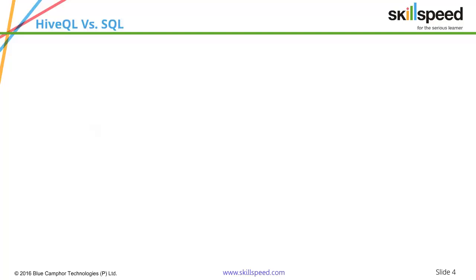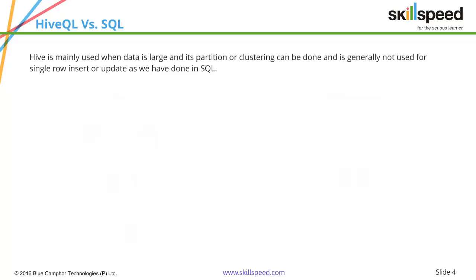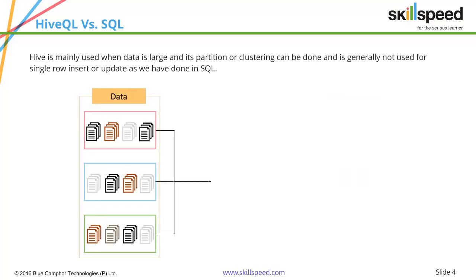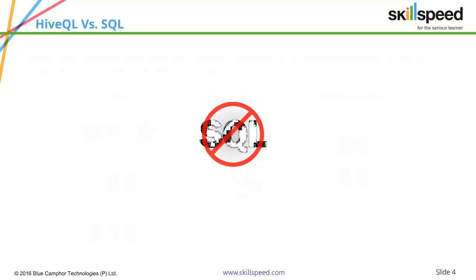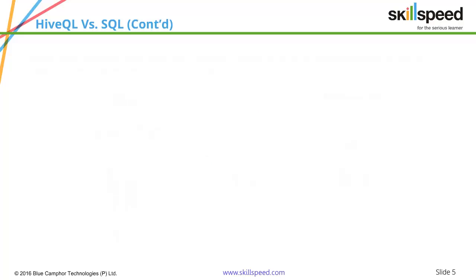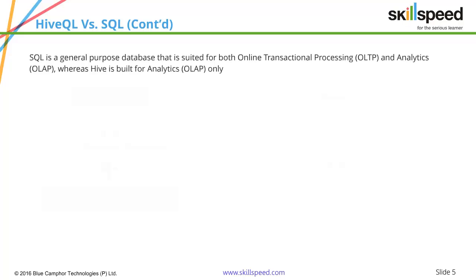When you compare Hive with SQL, Hive is mainly used when your data is really large and it has to be partitioned or divided, and it can be stored in a very large cluster. Hive is very useful when you want to store and query data in the Big Data world. Whereas SQL is mainly used when you want to store a smaller amount of data and when you want row-level updates and deletions.